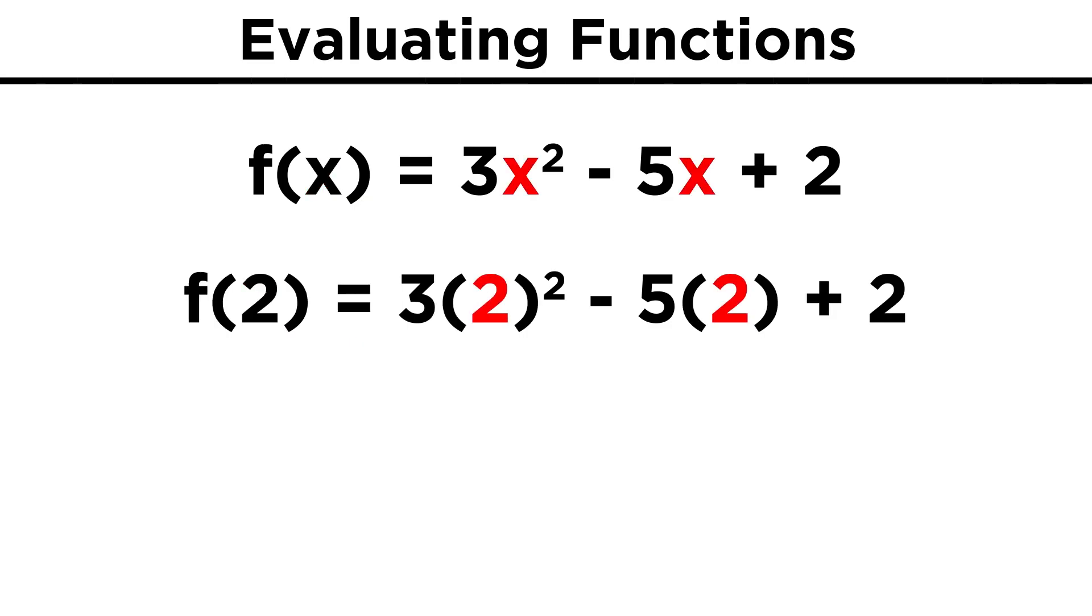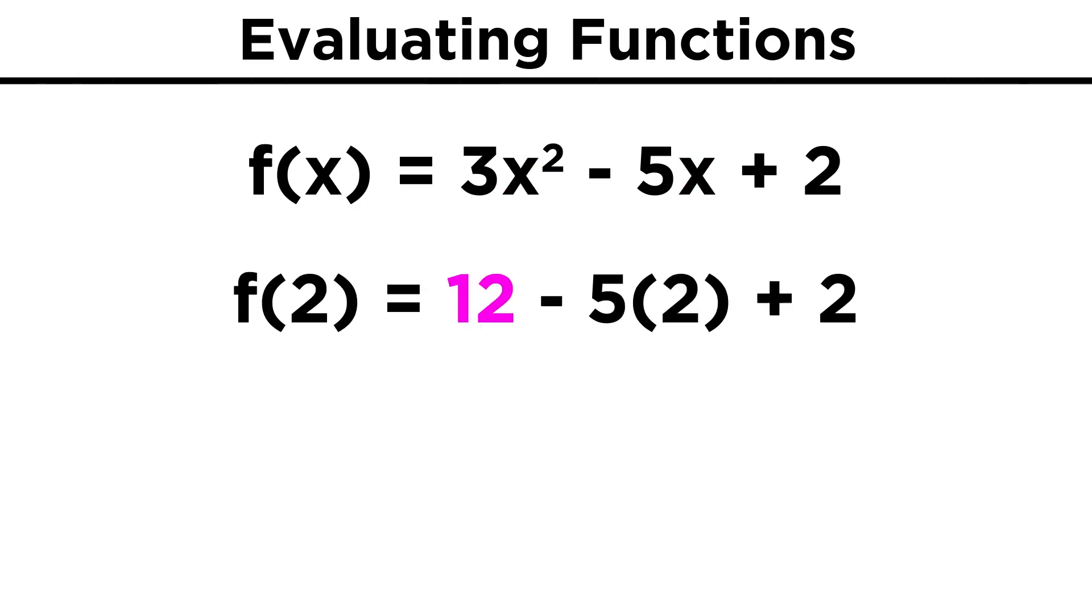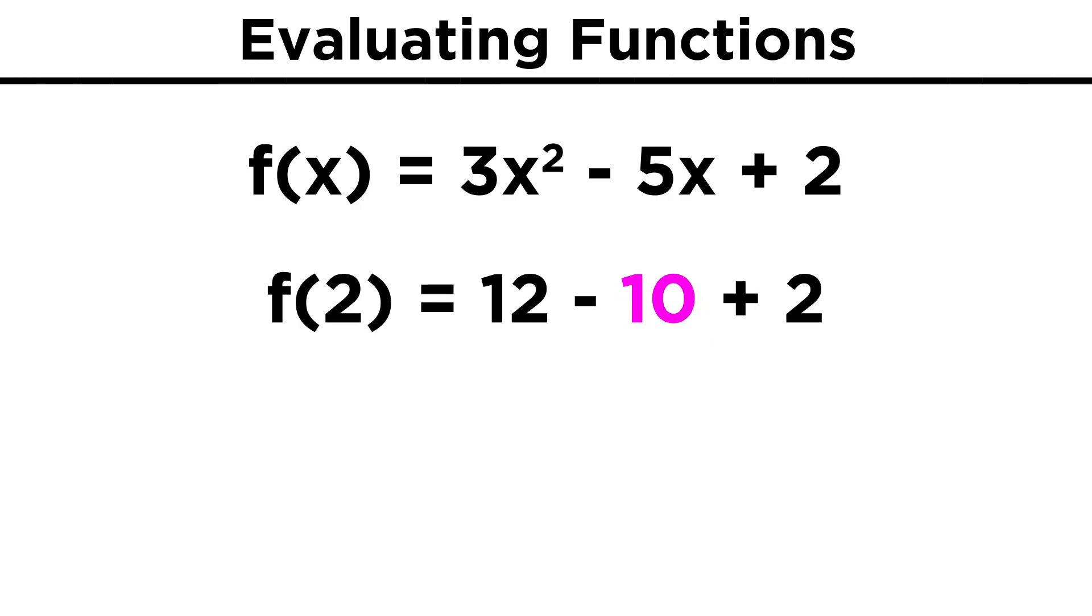We then also put a two instead of x wherever there is an x. Two squared is four times three is twelve. Five times two is ten. So twelve minus ten plus two equals four. f of two equals four.